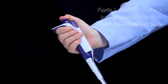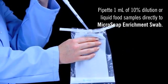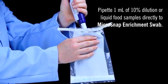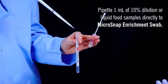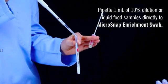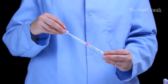For product samples, you may prepare a 10% dilution or add 1 ml of liquid food samples directly to the enrichment device. Replace the swab in the tube.